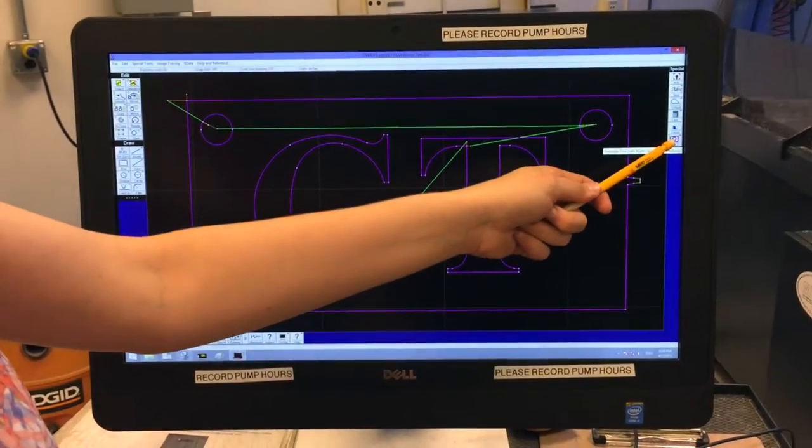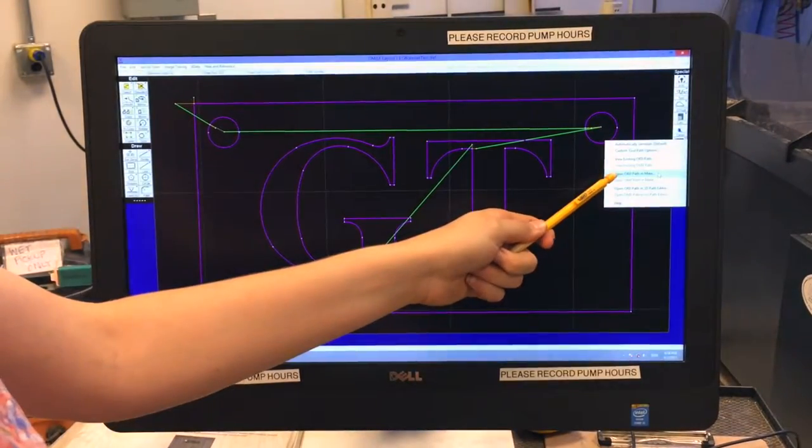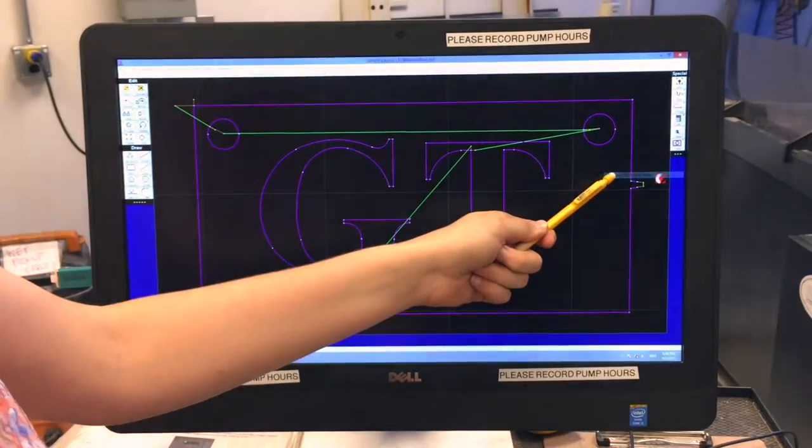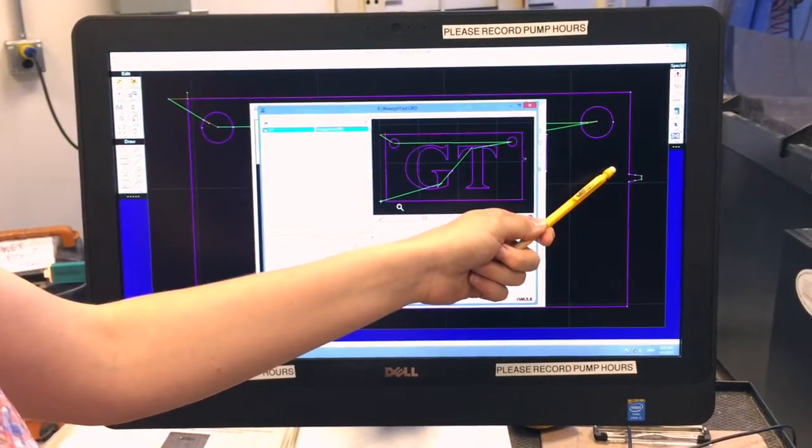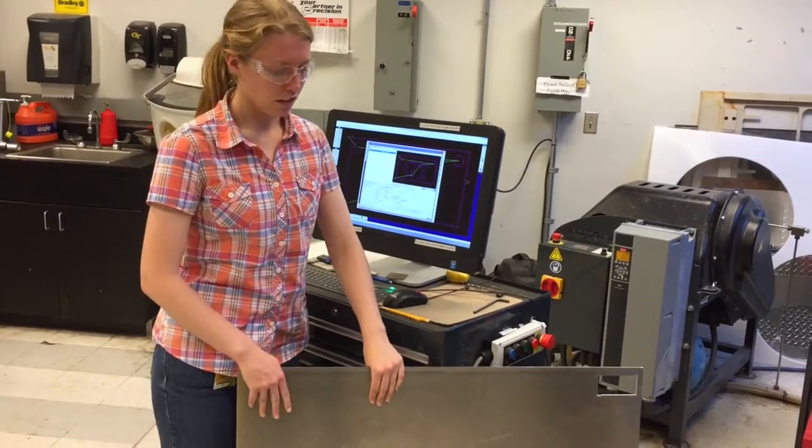So right-click on Path again and go to Open ORD Path and Make. For this demonstration, I will be using this sheet of aluminum.